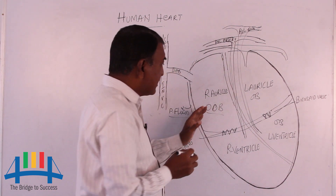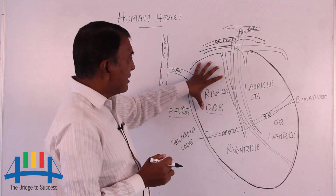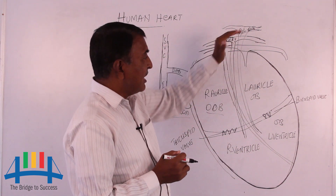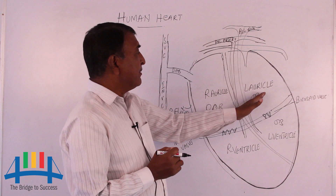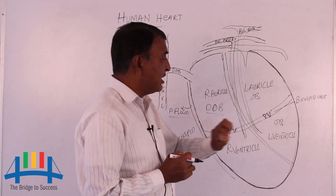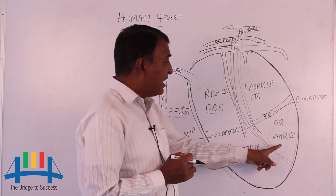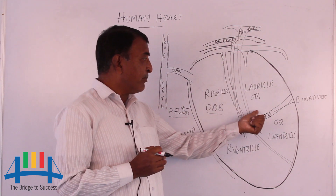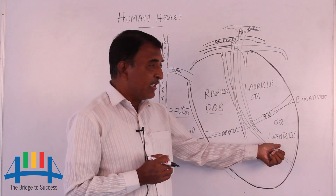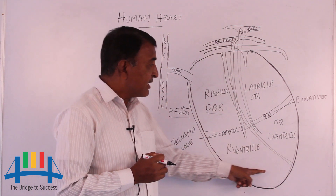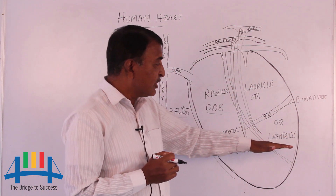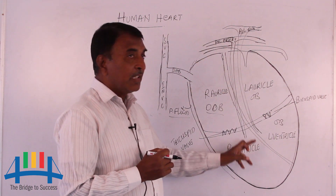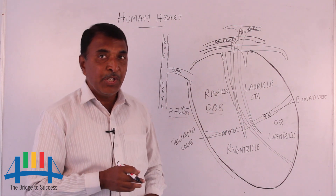The auricles supply deoxygenated blood to the ventricles but do not work very hard. The right ventricle pumps blood only to the lungs — a limited workload. The left auricle supplies oxygenated blood only to the left ventricle. However, the left ventricle has to supply oxygenated blood to all parts of the body, so compared to the other three chambers, the left ventricle works the hardest. Therefore, the muscle of the left ventricle is much thicker than the other three chambers. This is the internal structure of the human heart.